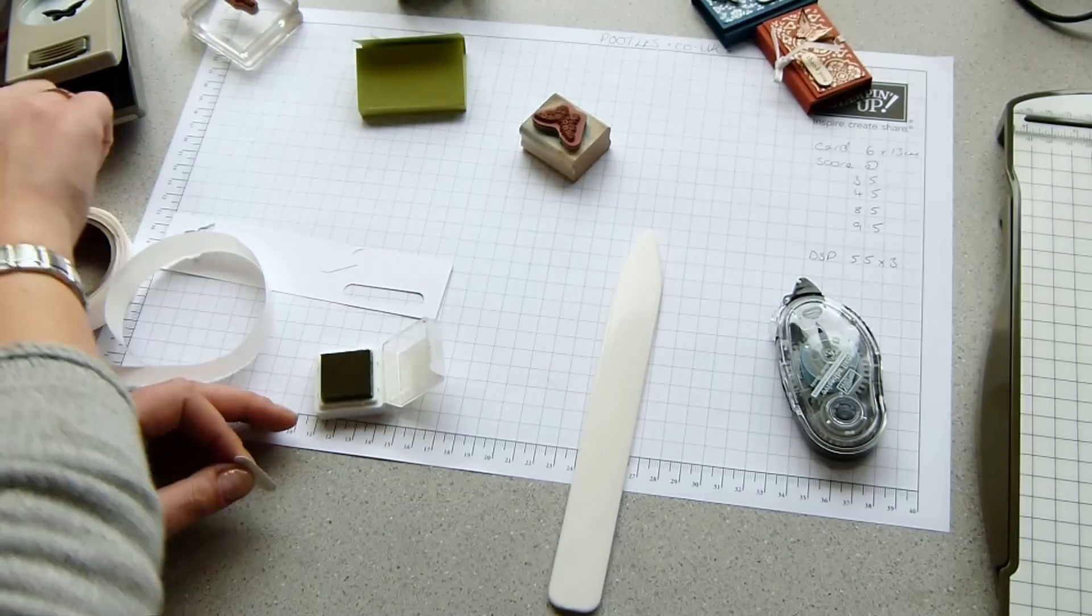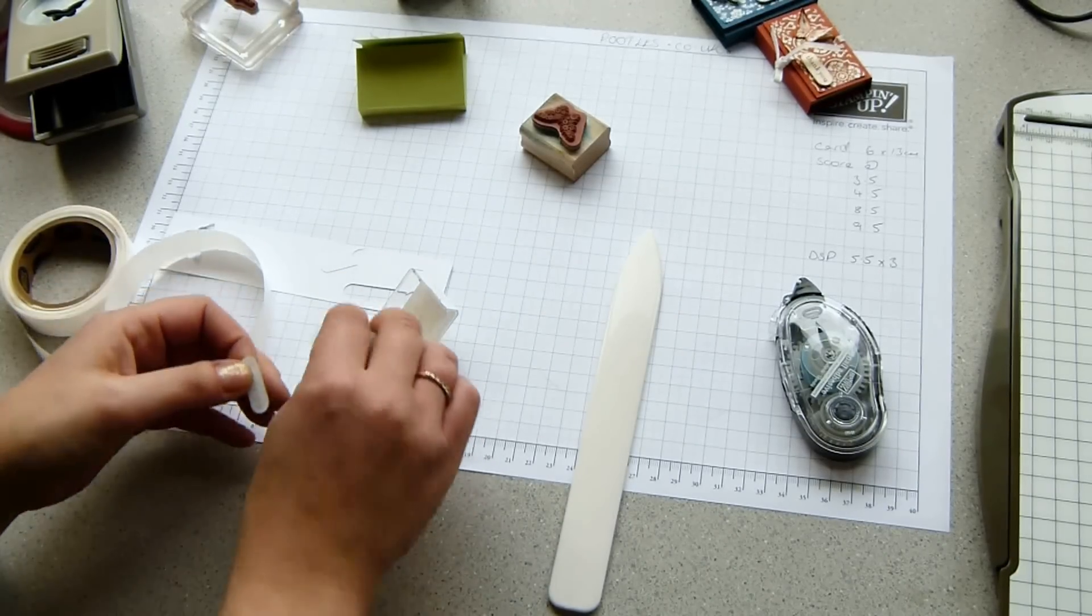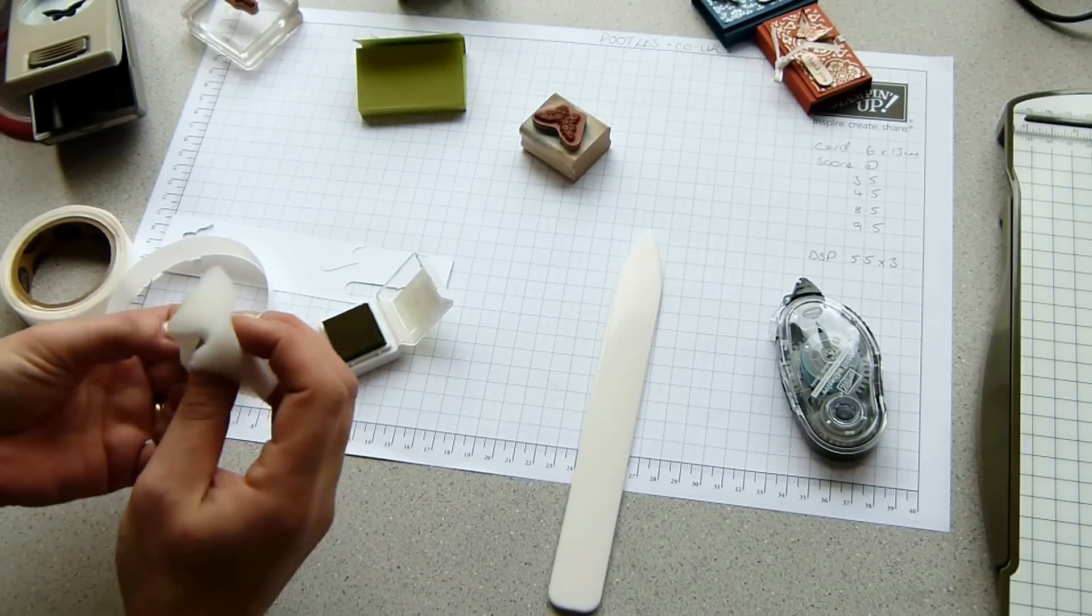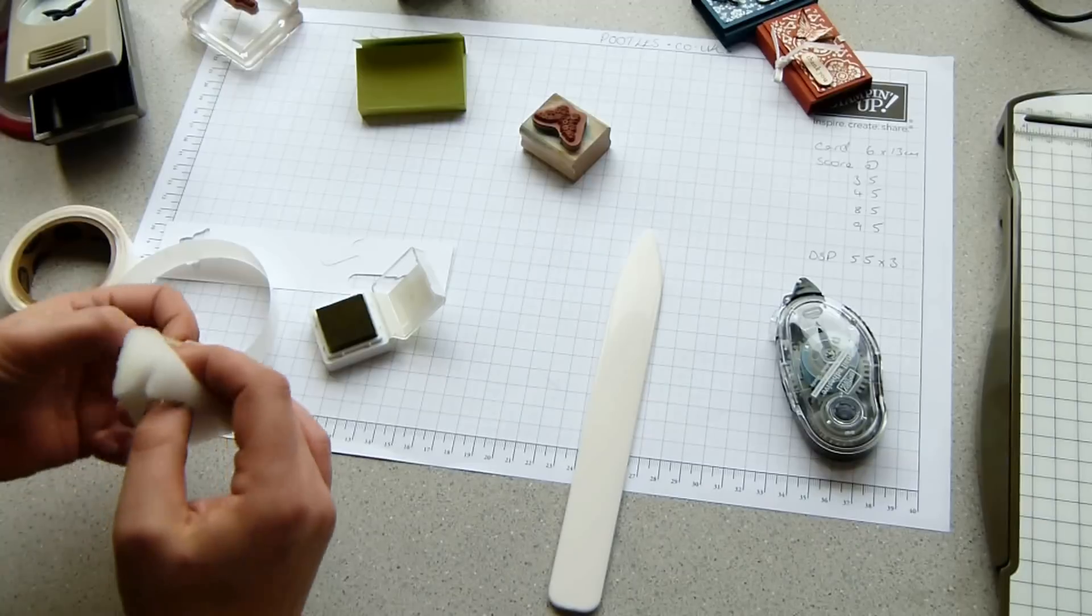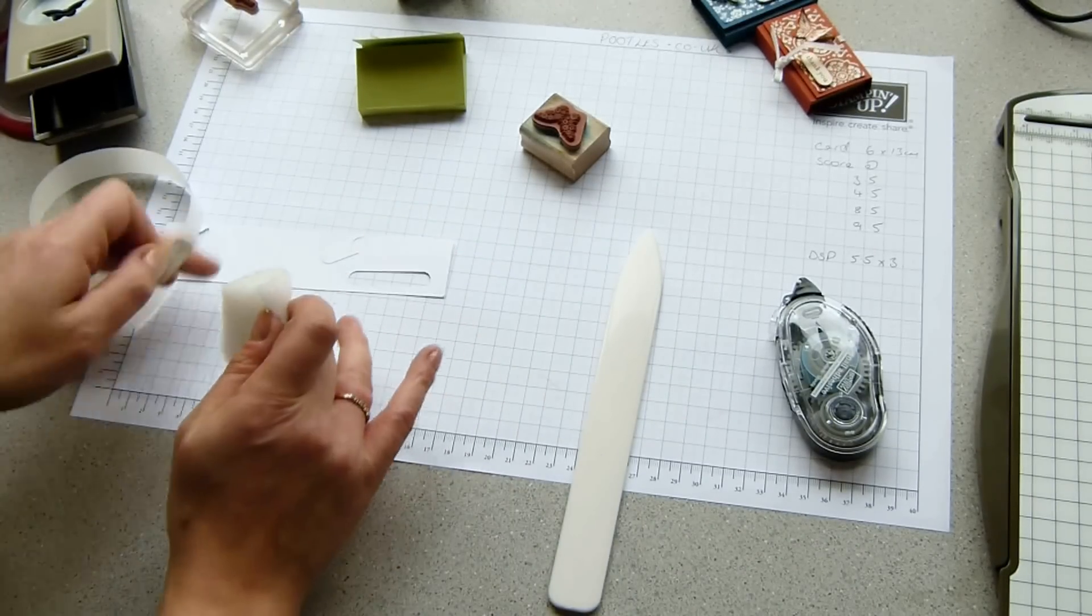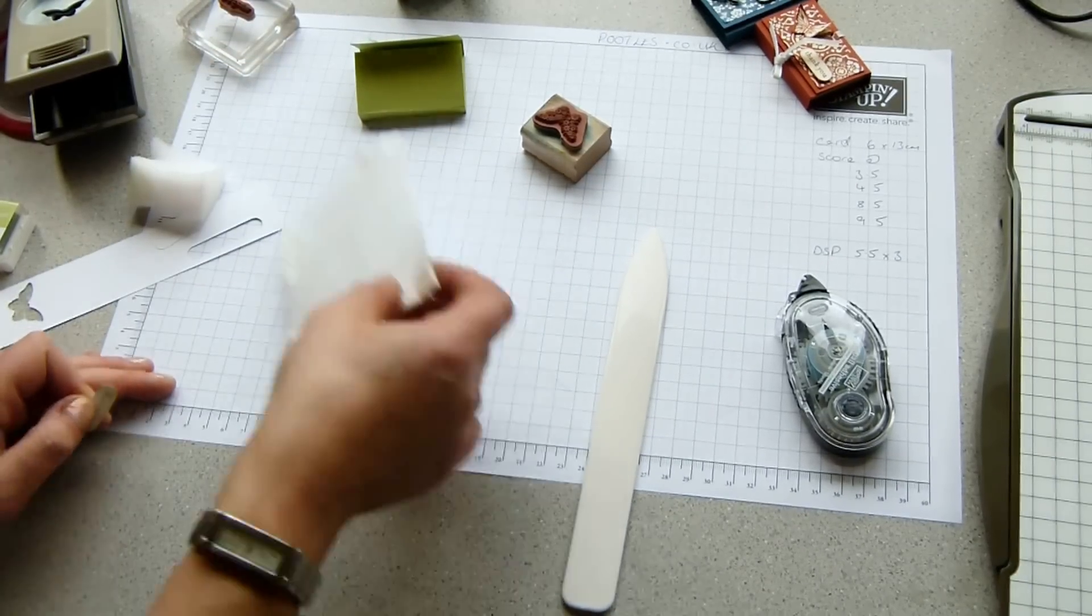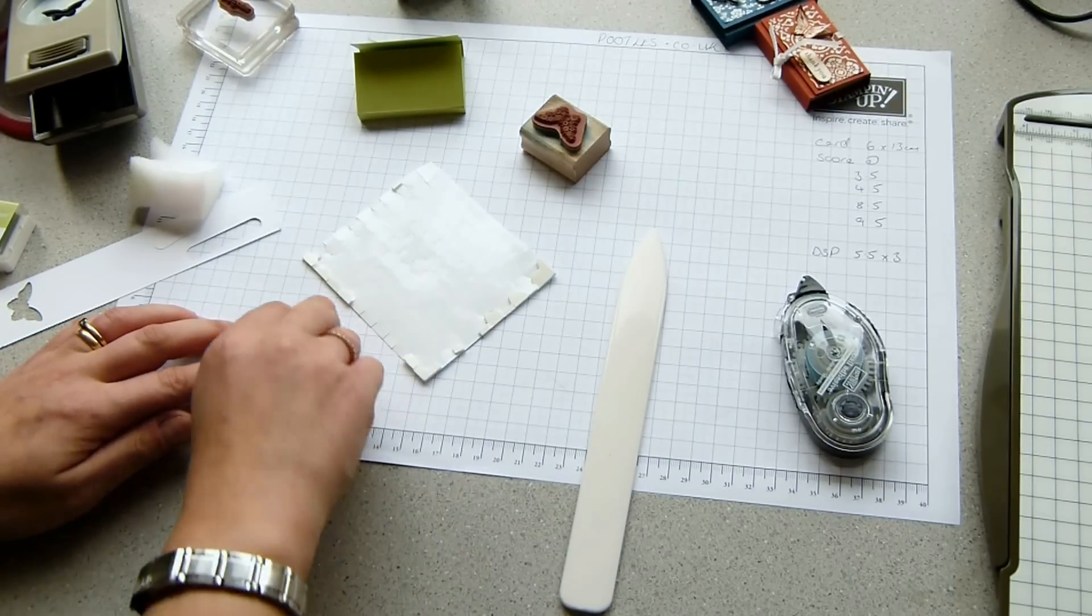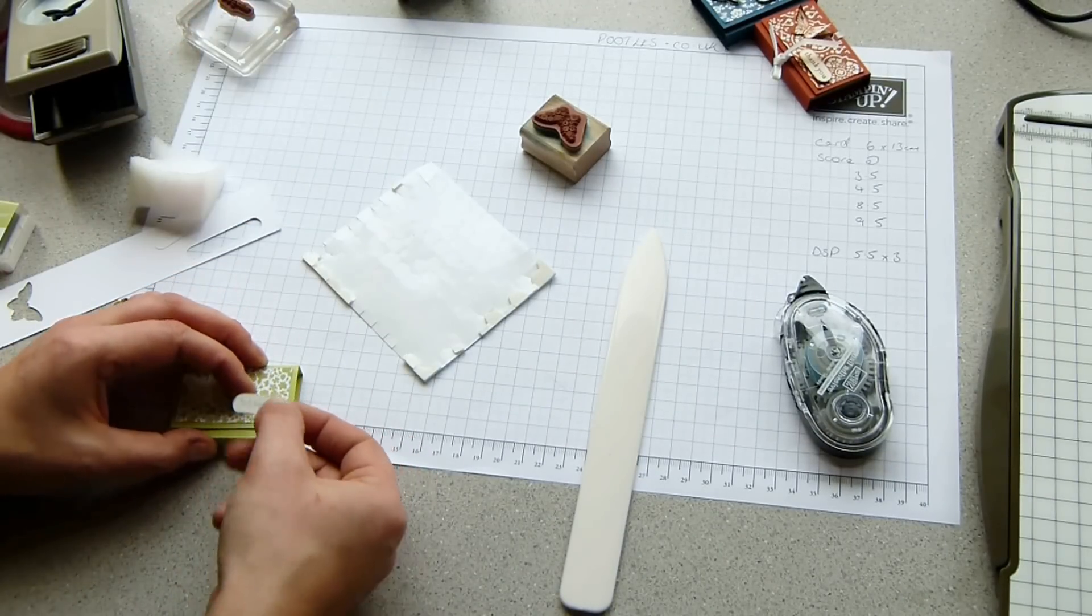And I want to sponge the edges because white is quite stark. This is a bath sponge I'm using. Probably not the best effect, but it seems to work for me. There we go. My dimensionals, you can see they're quite big, but I only wanted a little strip. So I've cut down the edges and pop that on here.